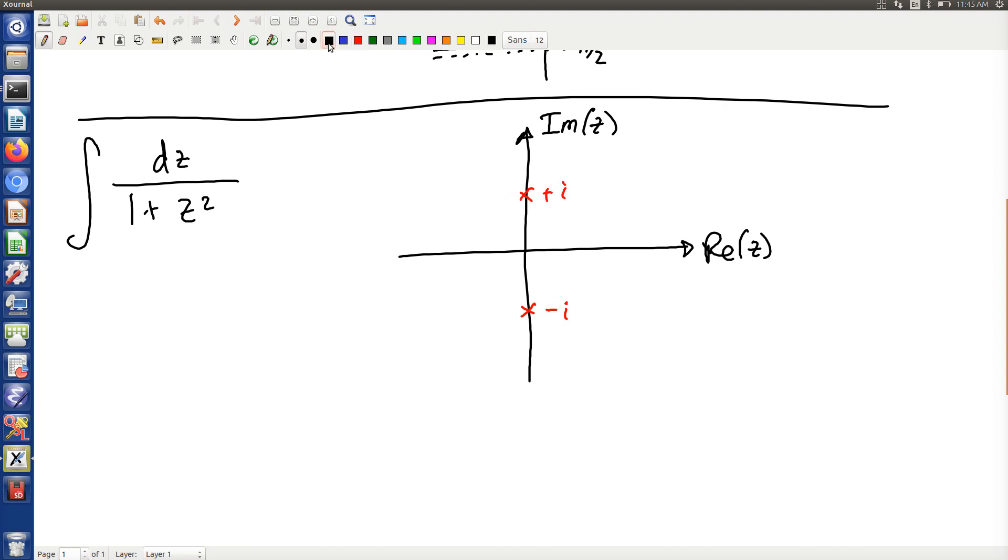Why is that? Well, that's because I factored the denominator like so. So those are those two poles.